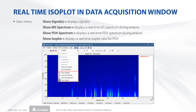The data acquisition window allows for real-time monitoring of measured data. Now it can also display the PDA isoplot in real time. The view menu has been rearranged to enable smooth switching between the signal, spectra, and isoplot views. The PDA and MS spectra and isoplot views are available in the corresponding extensions.